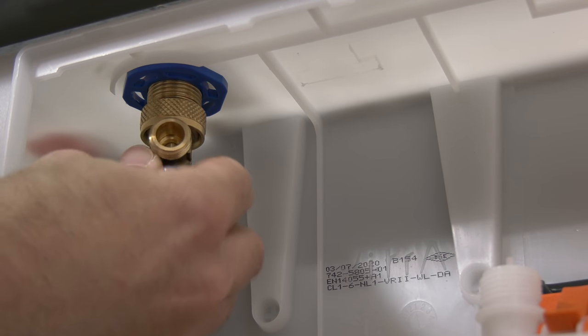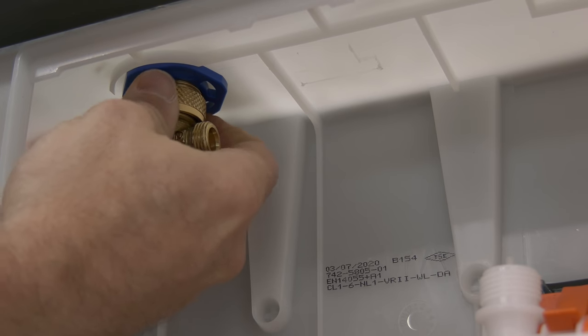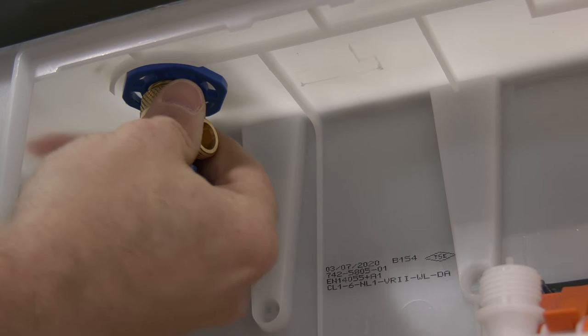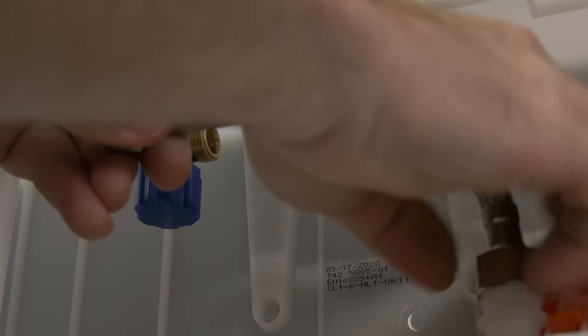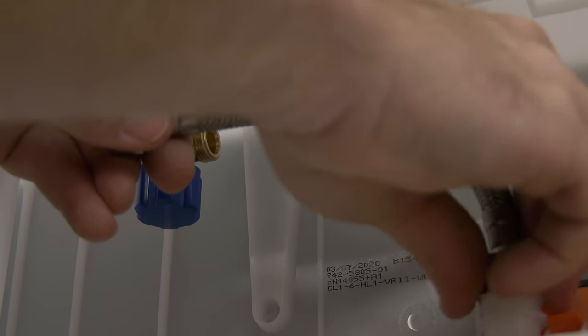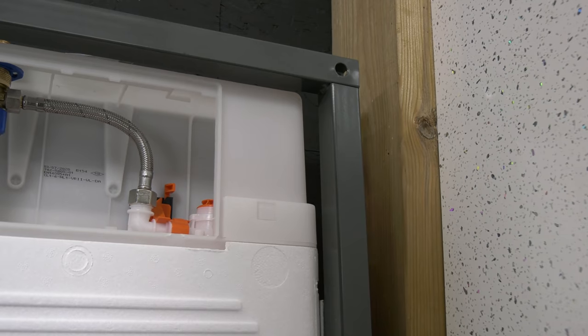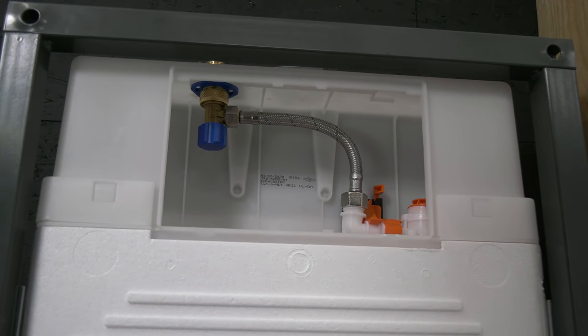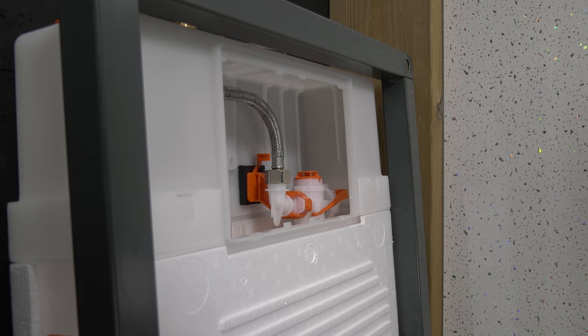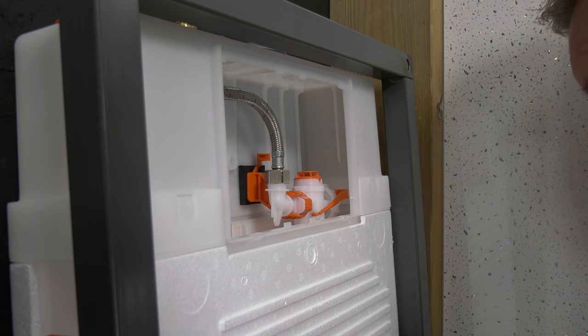We can now get the inlet sorted out and ready for when we second fix later on. All we need to do is remove this orange bung here and then pop our inlet in. It recedes nicely into that square housing, which means that from underneath, you can do up a locking nut to make sure it's all held in. I like the fact here that the thread on this is brass.